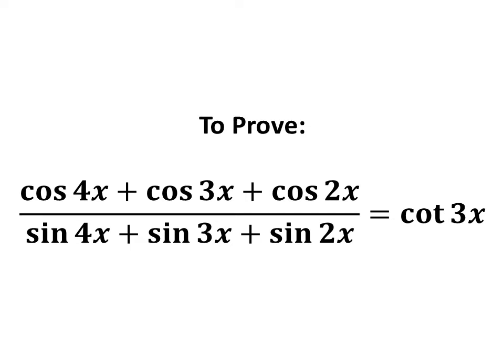In this video, we will learn to prove the equation: cosine of 4x plus cosine of 3x plus cosine of 2x, upon sine of 4x plus sine of 3x plus sine of 2x, is equal to cotangent of 3x.